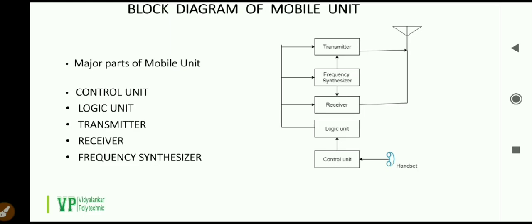The receiver is a dual conversion superheterodyne type receiver. Its frequency range is 870 to 890 MHz, and there are 666 received channels which are spaced 30 kHz apart.